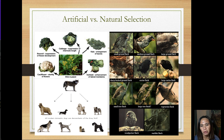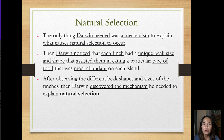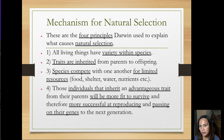With natural selection, according to Darwin, these finches are of similar kind; it's just that they changed over time and split into different kinds, but they're all finches. Darwin then noticed that each finch had a unique beak size and shape that assisted them in eating the type of food most abundant on each island. After observing these different beak sizes and shapes, Darwin discovered the mechanism he needed to explain natural selection.